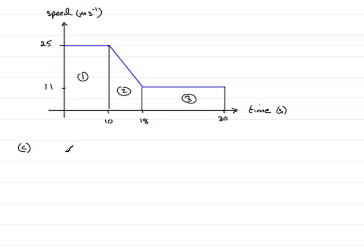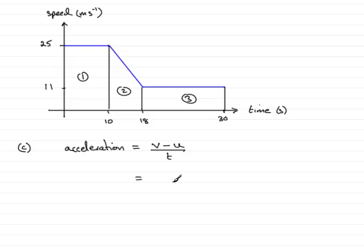So in order to find the deceleration, first of all I'm going to find the acceleration over that interval. So acceleration is equal to the change in velocity — that would be V minus U divided by the time taken. The final velocity over this interval was clearly 11, so we've got 11 minus the initial velocity, which was 25 up here, divided by the time. The time it took to change from one speed to another was clearly 8 seconds.